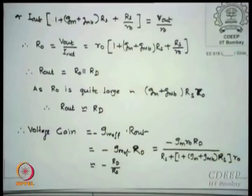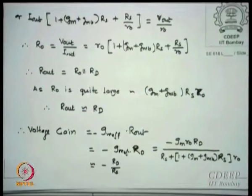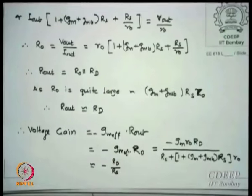Writing Gm·R0_eff and simplifying — which terms are smaller and which are larger, canceling Rs and R0 — I get roughly: gain ≈ −Rd/Rs. This ratio has very interesting features.